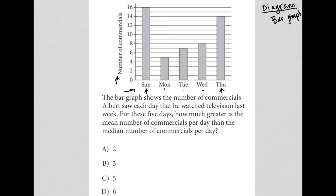how much greater is the mean number of commercials per day? So let me just figure out what that is, first of all. What is the mean for the number of commercials Albert saw each day? Well, for Sunday he saw 16. So first of all, we find the mean by adding up all of these values and then dividing by the number of days that these number of commercials are spread across. So that would be five.